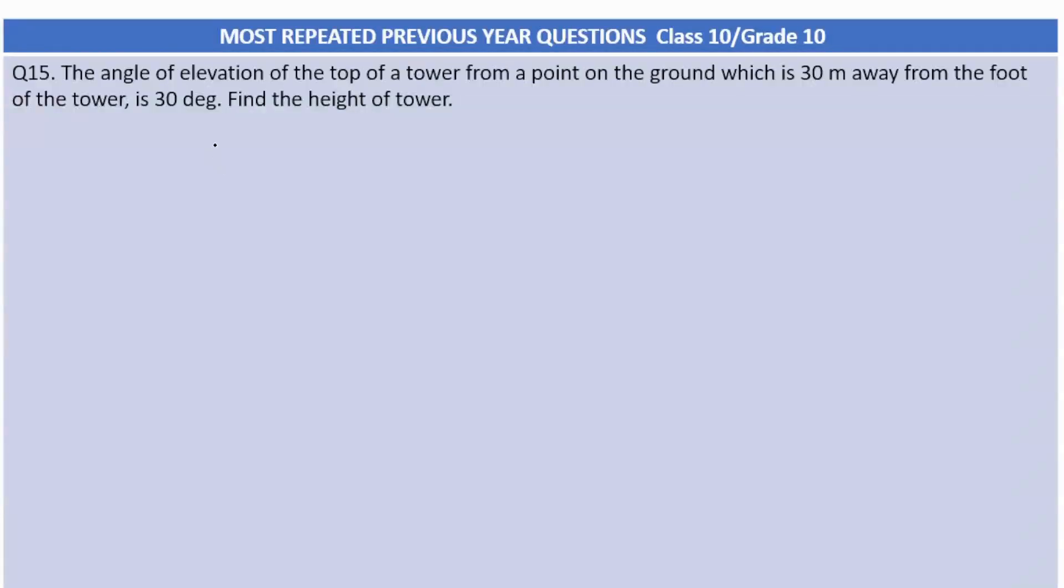The next question is from trigonometry. The angle of elevation of the top of a tower from a point on the ground, which is 30 meter away from the foot of the tower is 30 degree. So if this is the tower, and the point is 30 meter away, this distance is 30 meters. And the angle of elevation is 30 degrees.